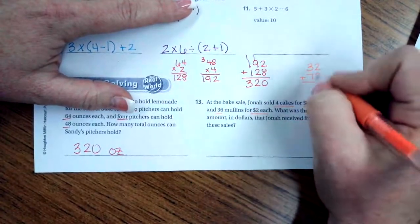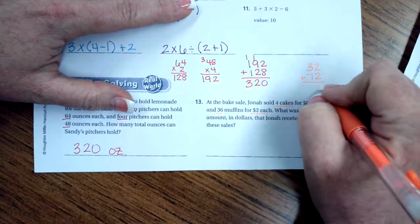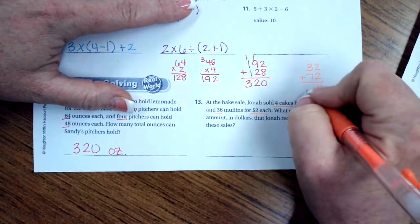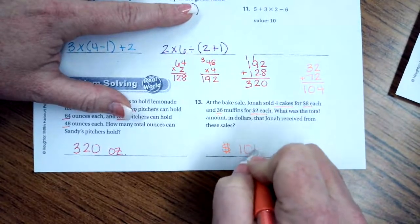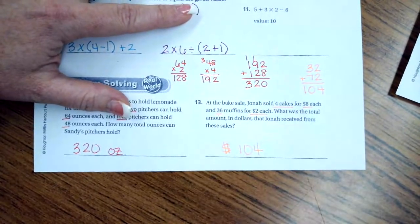In order to find the total, we need to add those two together. So 2 plus 2 is 4. And 3 plus 7 is 10. So $104. All right, guys.